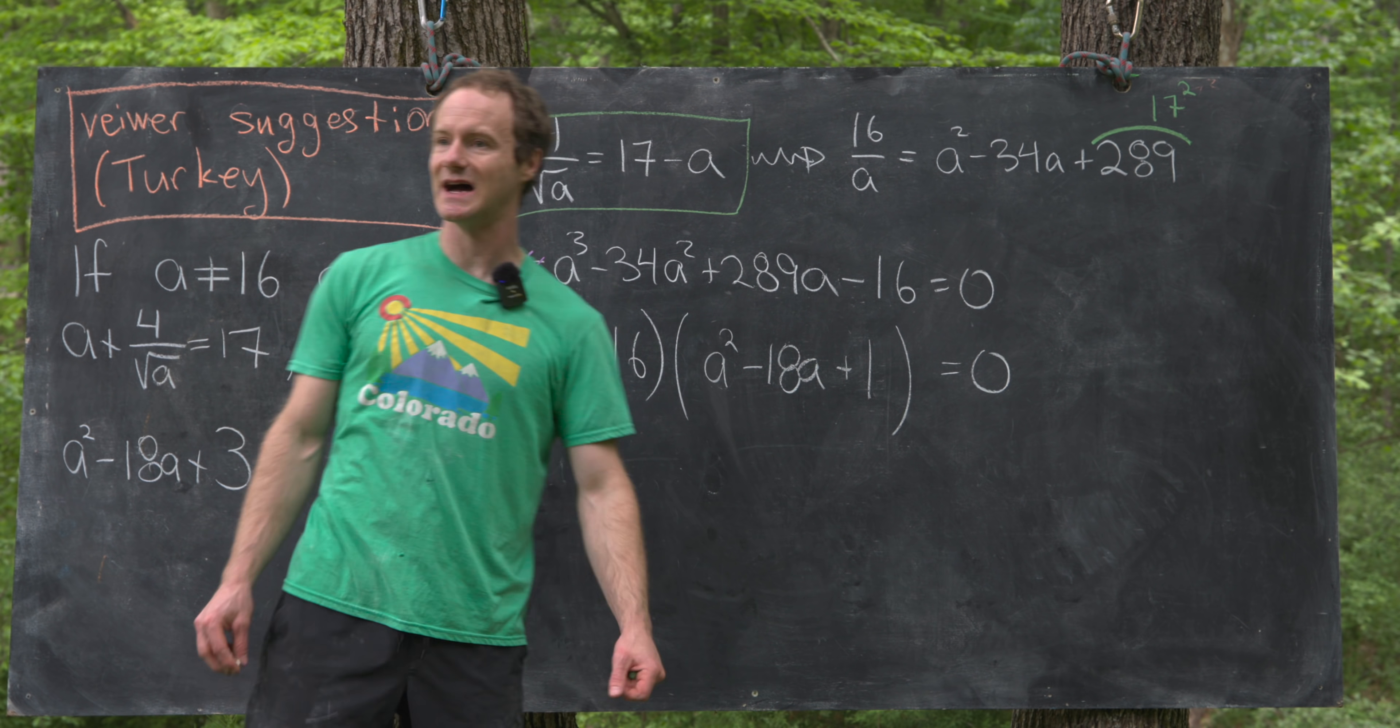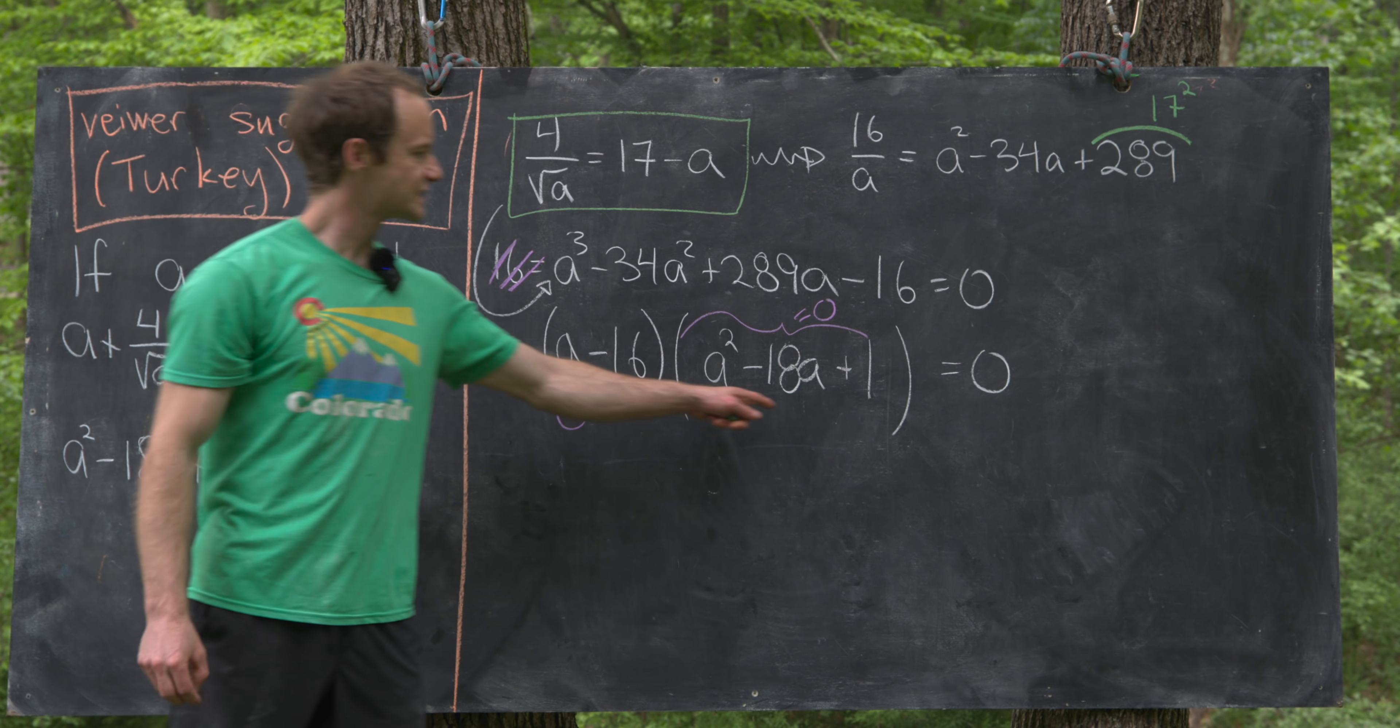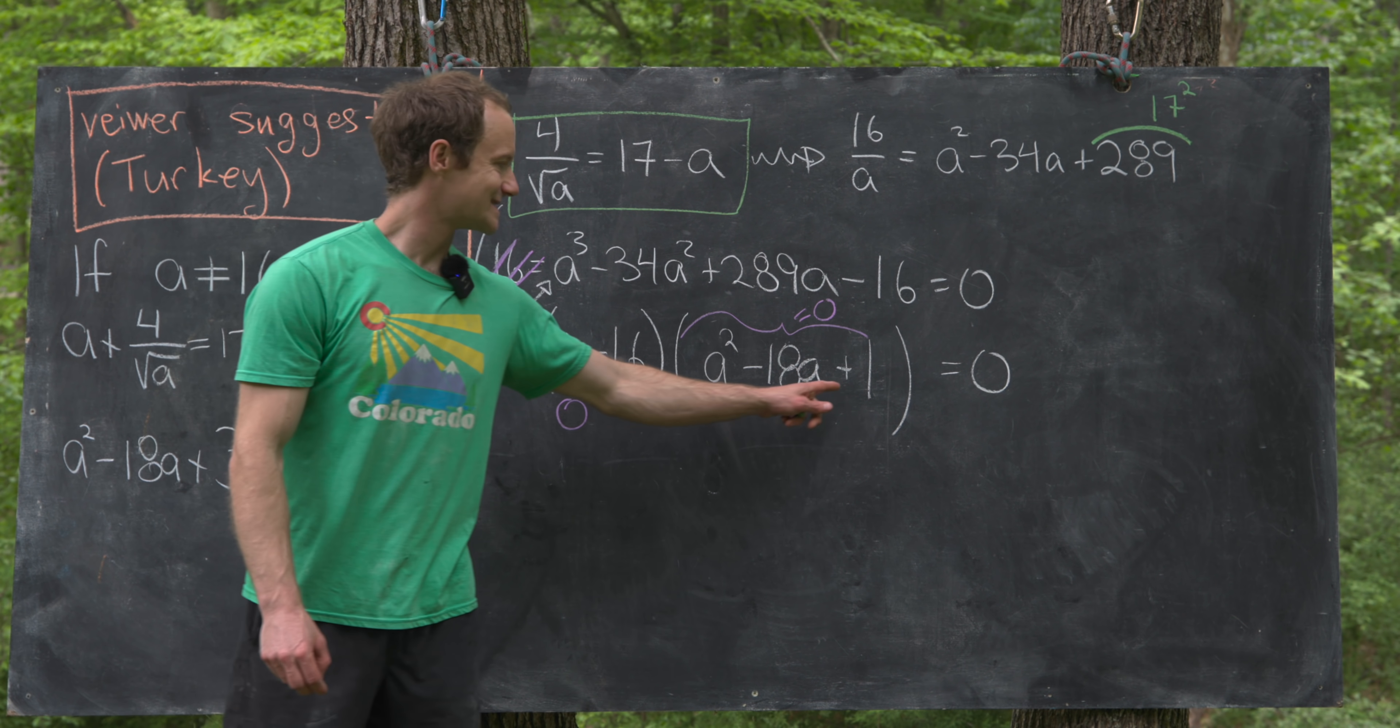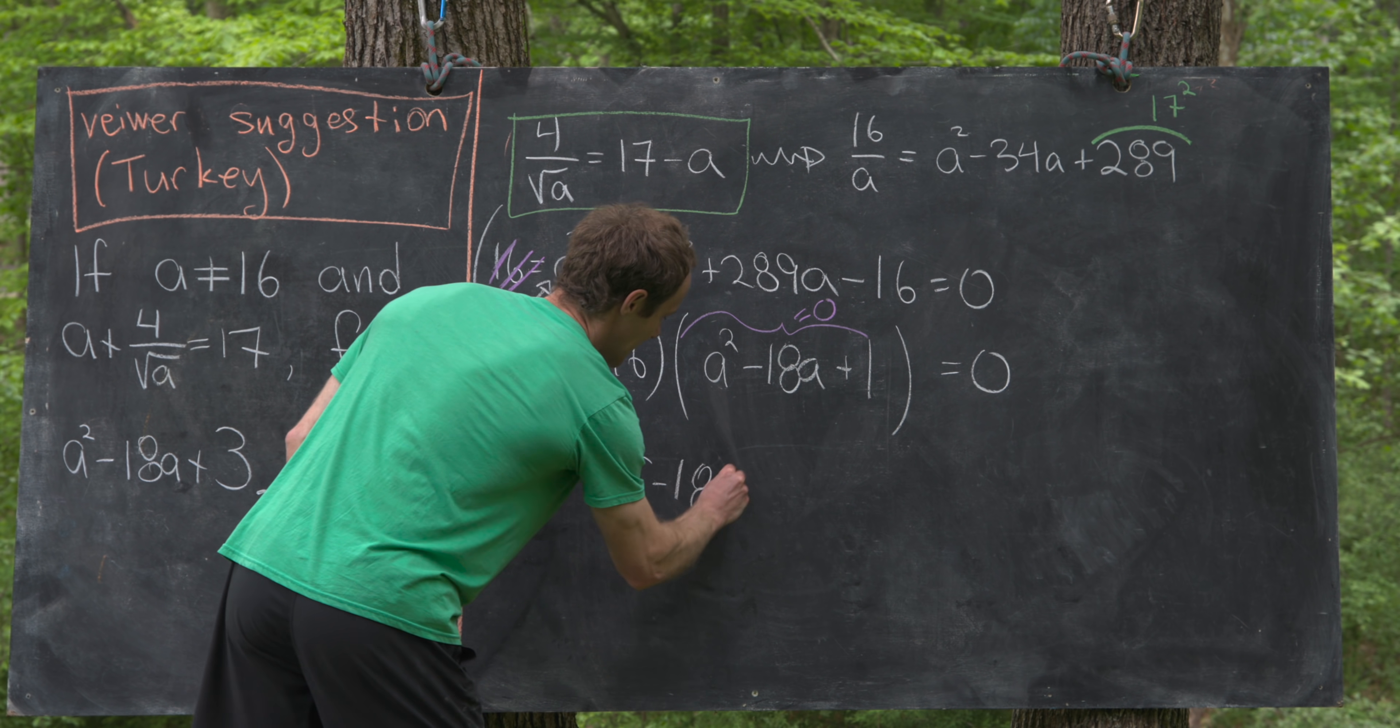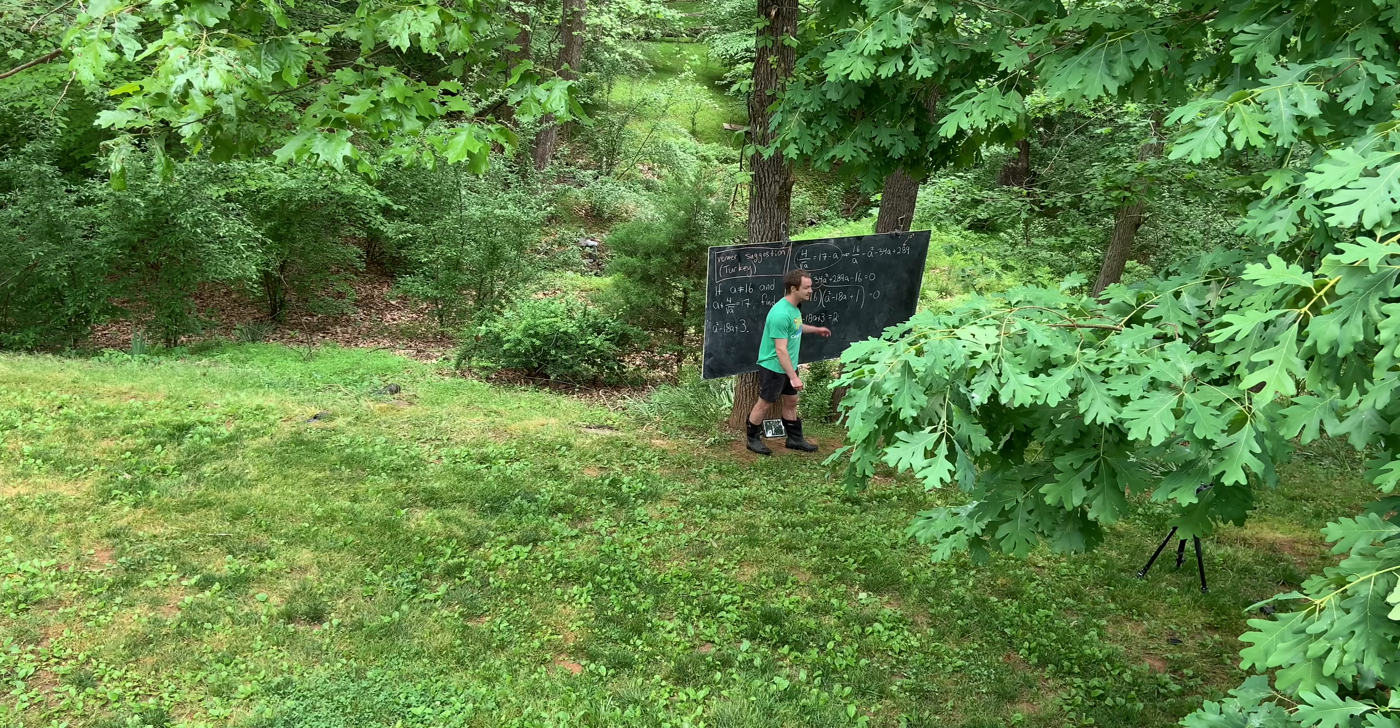We know that we are to assume that a is not equal to 16. So that means that this thing right here is not equal to zero. But since the product is equal to zero, that tells us that the quadratic term is equal to zero. But now notice this quadratic term is almost exactly this quadratic term, which is our goal. All that it lacks is a plus 3 instead of a plus 1. But we can just add 2 to both sides of this equation given by this purple, and then we'll have it. So we have a squared minus 18a plus 3. Well, think about that 3 as being 1 plus 2, so that's going to be the same thing as 0 plus 2, which is 2. And so we've got our final value for our quadratic expression in a. And that's a good place to go.